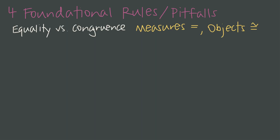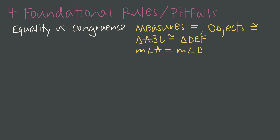First is the idea of equality versus congruence — it's really common to make this mistake when writing proofs. We use an equal sign when we're talking about measures of things, like the degree measure of an angle or the length of a line segment, but we use congruence when we talk about objects. So we might say triangle ABC is congruent to triangle DEF because those are objects, whereas we'd say the measure of angle A is equal to the measure of angle D because we're talking about measures.